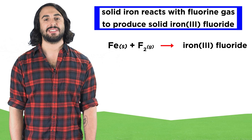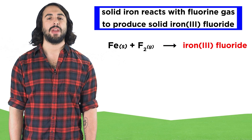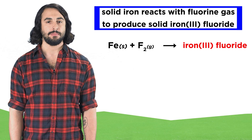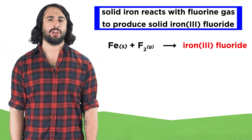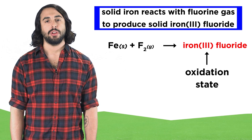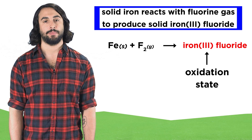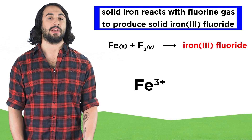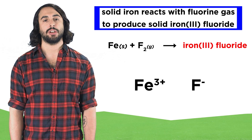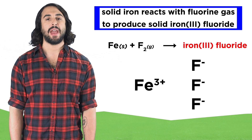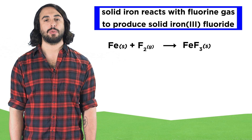Then the forward arrow, separating the reactants from the products. And lastly we have iron three fluoride. We know the product has iron and fluorine in it, but in what ratio? This Roman numeral three is telling us the oxidation state of the iron atom, which will be plus three. Fluoride ions are minus one, so we will need one iron and three fluorides to make a neutral molecule. So we write FeF₃ with the subscript S.